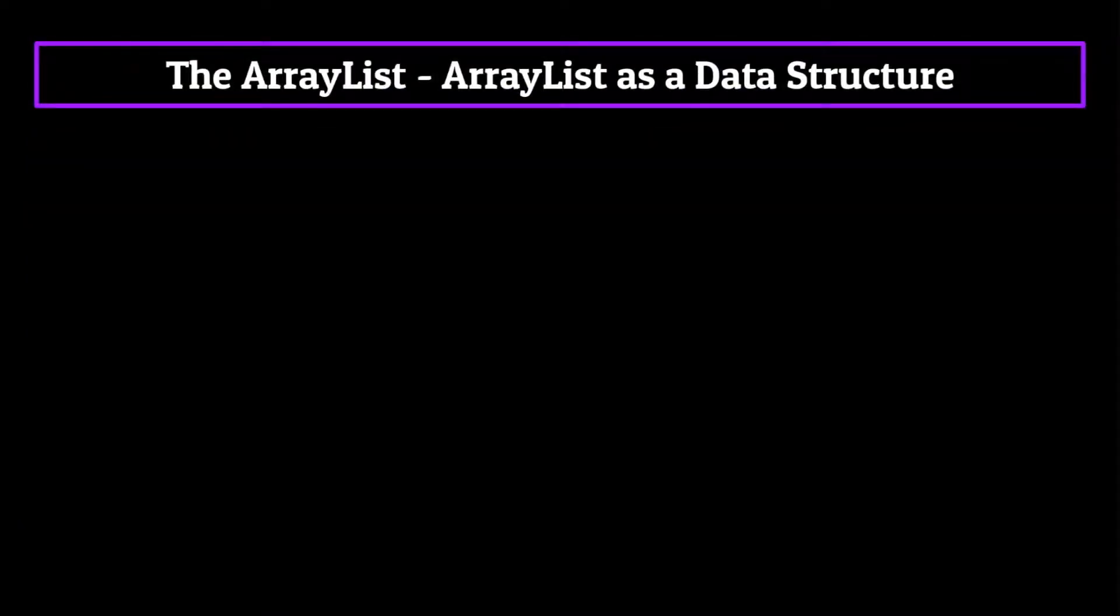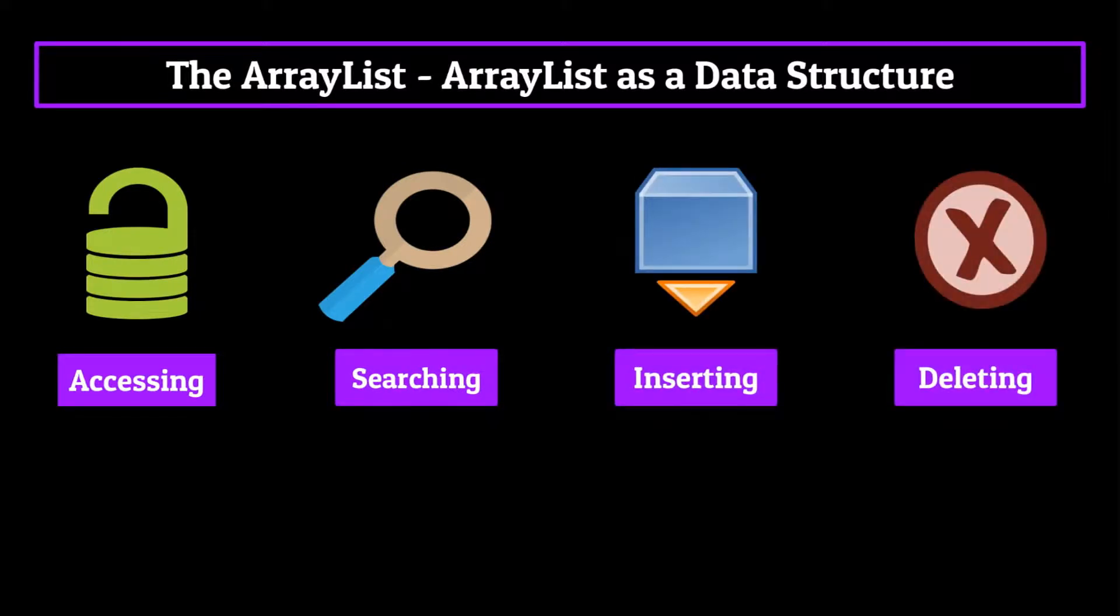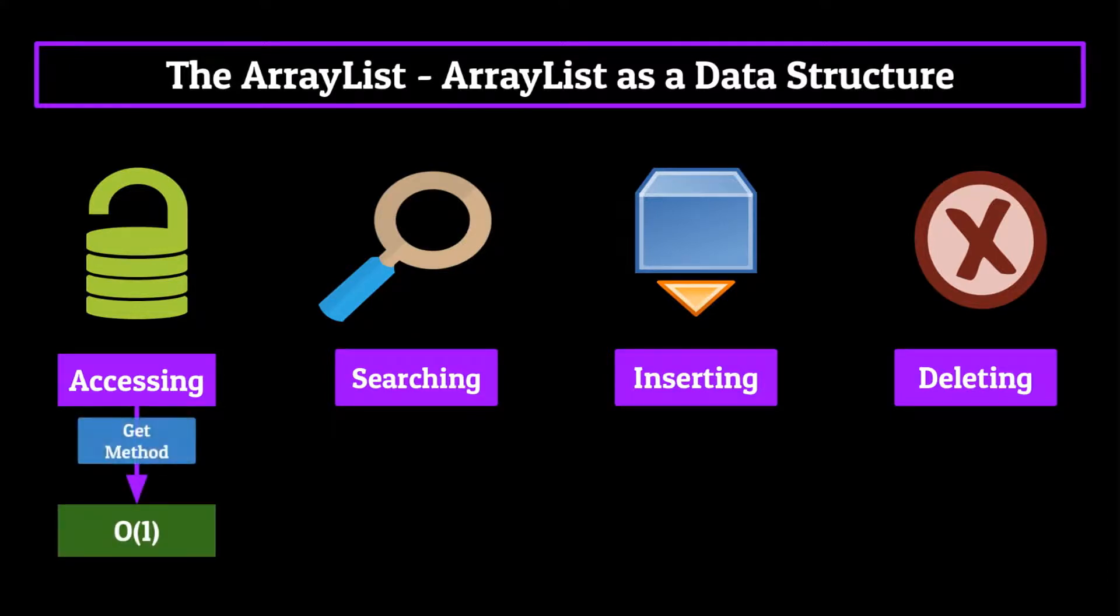Let's now move on to the ArrayList as a data structure. Again, we're going to be looking at its four time complexity equations for accessing, searching, inserting and deleting. Now, if you remember back to the beginning of the segment, we mentioned that the ArrayList is backed by an array. And that means that just like the array, it too will have O of one accessing power. This means that when we use our get method, it will return to us the value at the index provided in instantaneous time.